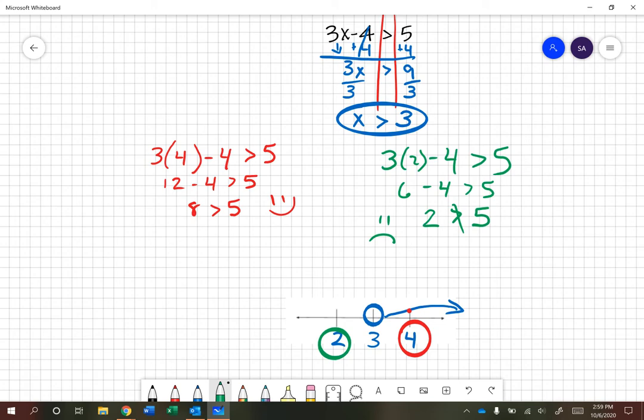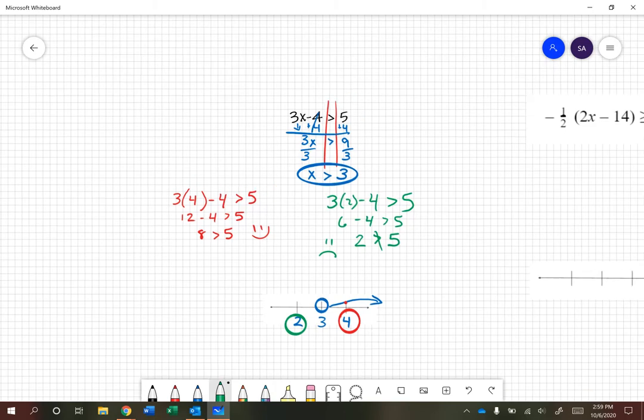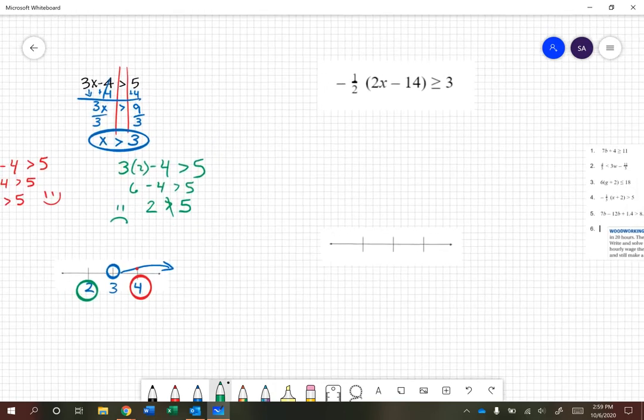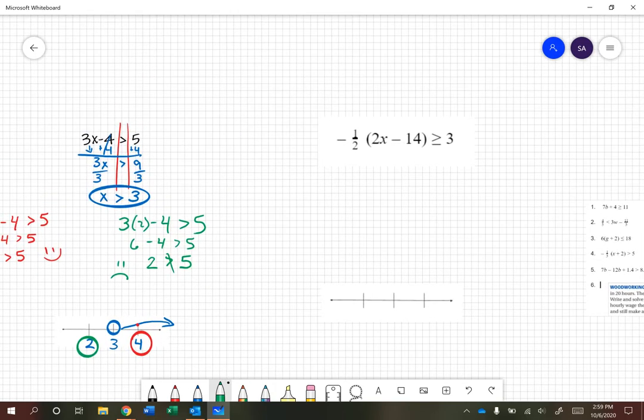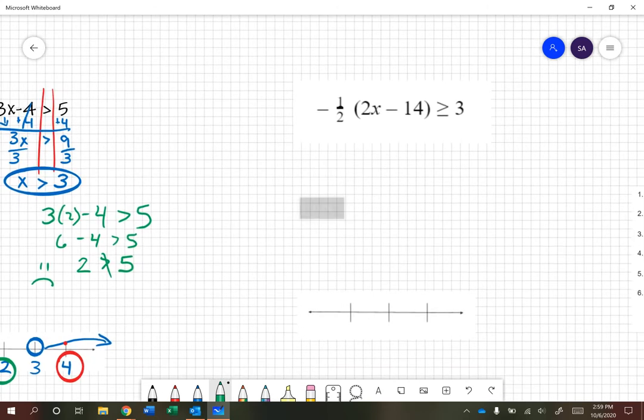All right, let's look at one that's a little more complicated. Not too much, but just a little bit. So we have 1 half times the quantity 2x minus 14 is greater than or equal to 3. First thing I'm going to do, once again, is highlight that inequality sign so that I know what it is and what I have to do with it, if in case I have to do anything different with it.